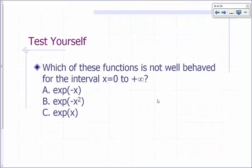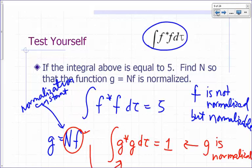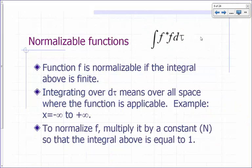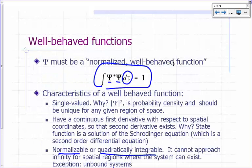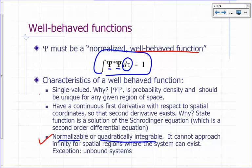So we also said that for a function to be well-behaved, not only must it be... let's go back here. We said Ψ must be a well-behaved function, and one of the conditions for it to be well-behaved is for it to be normalizable. In fact, we want it to be normalized. It must also be single-valued, and you must have a second derivative.